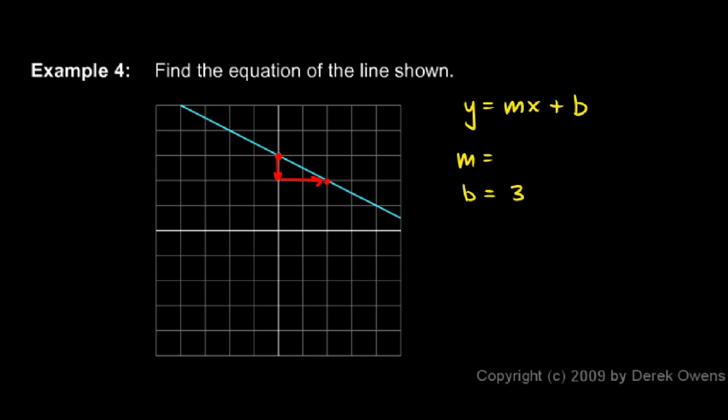This is a rise of negative 1 and a run of 2, so the slope is negative 1 half and the y-intercept is 3. So the equation for the line is y equals negative 1 half x plus 3.